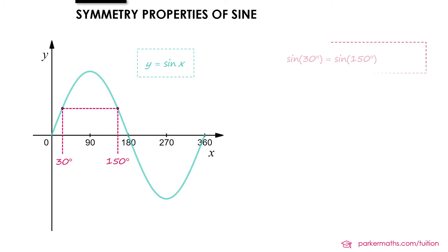And so that tells us that sine 30 equals sine 150. You could perhaps realize that from sketching sine 30 and sine 150 on the unit circle as well.